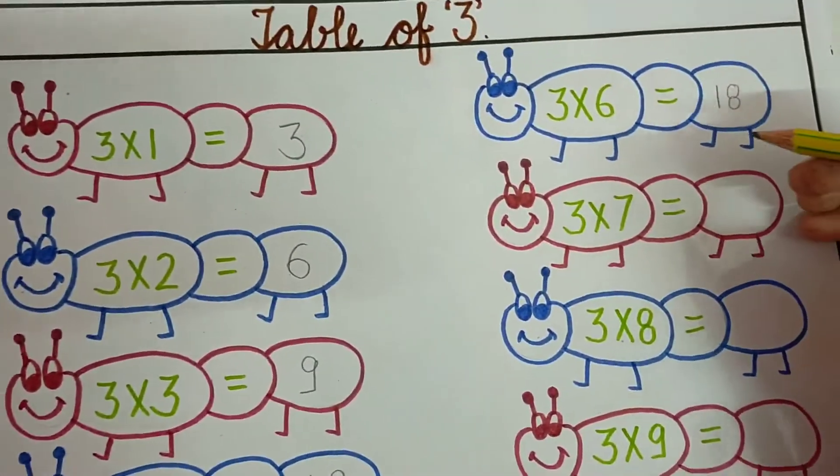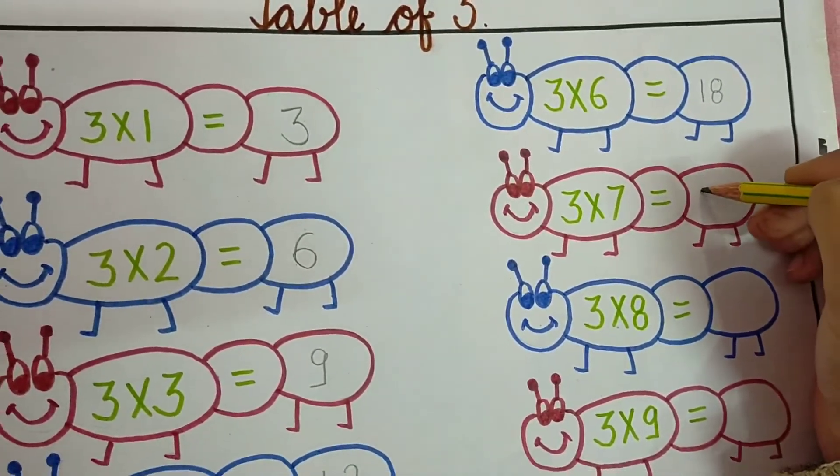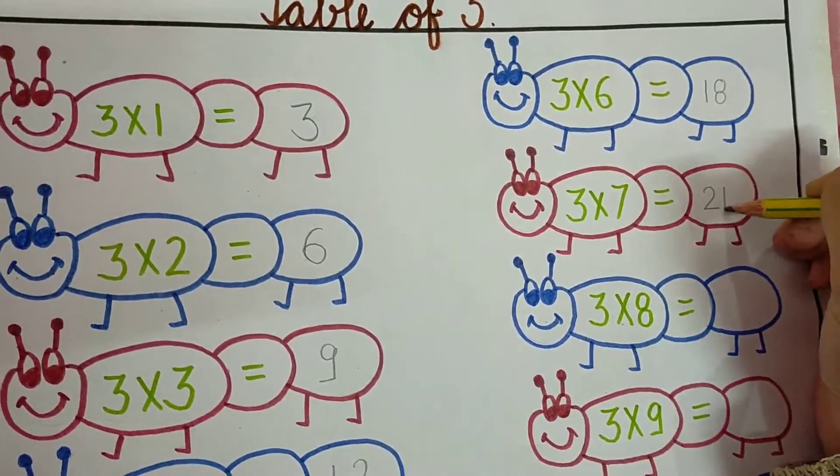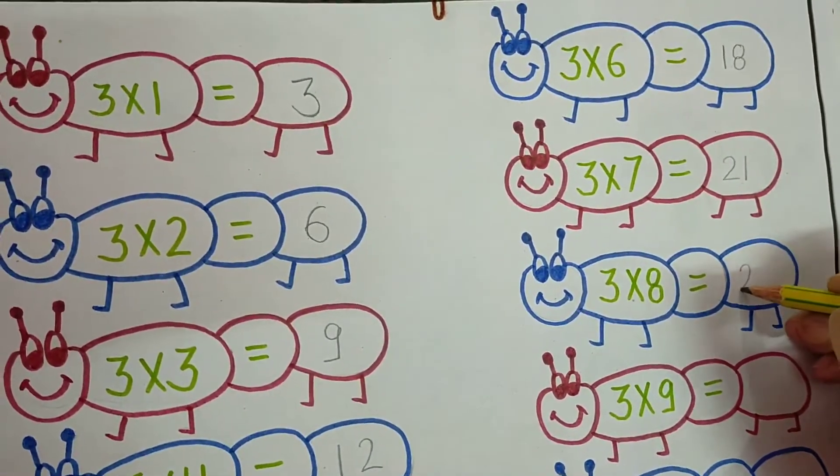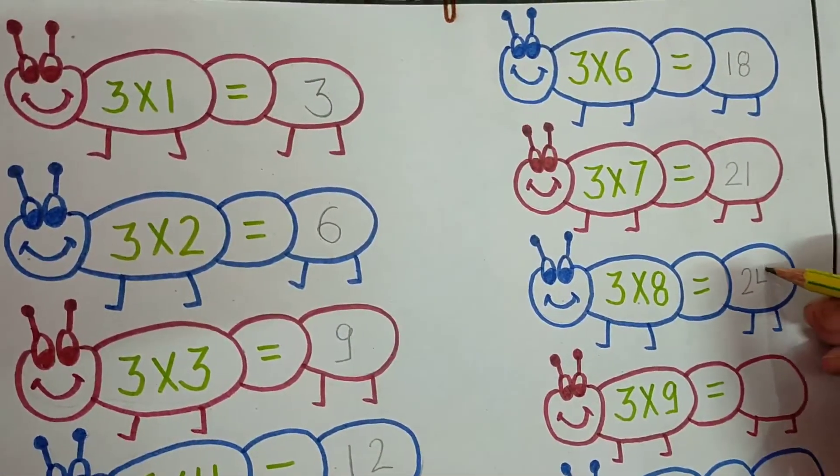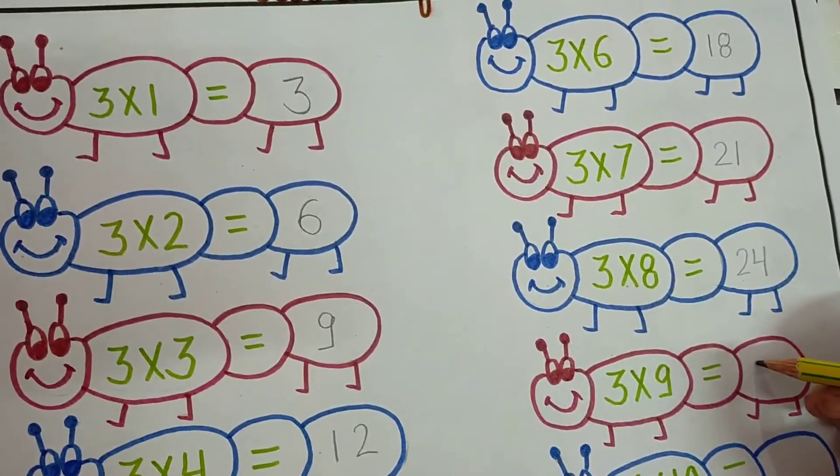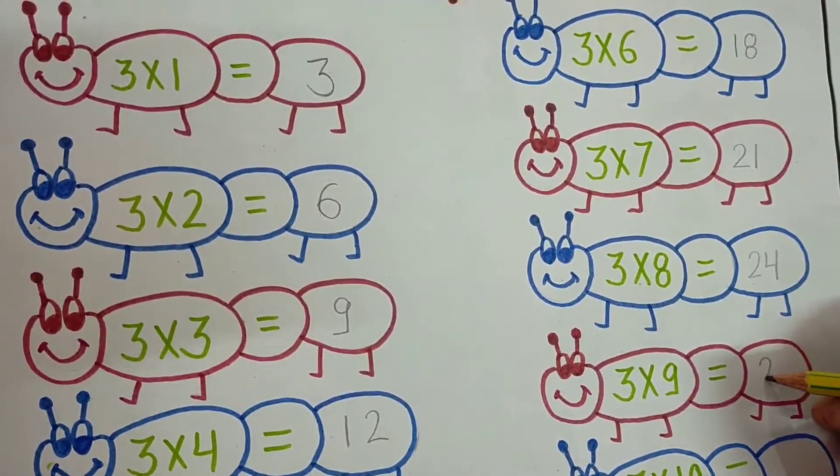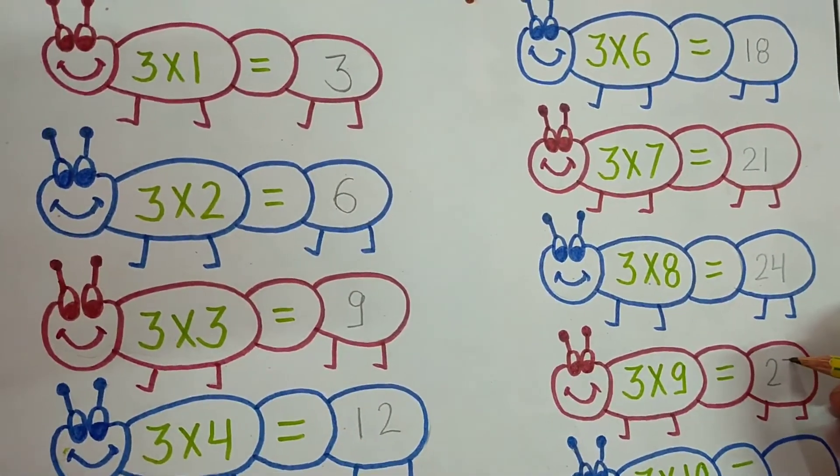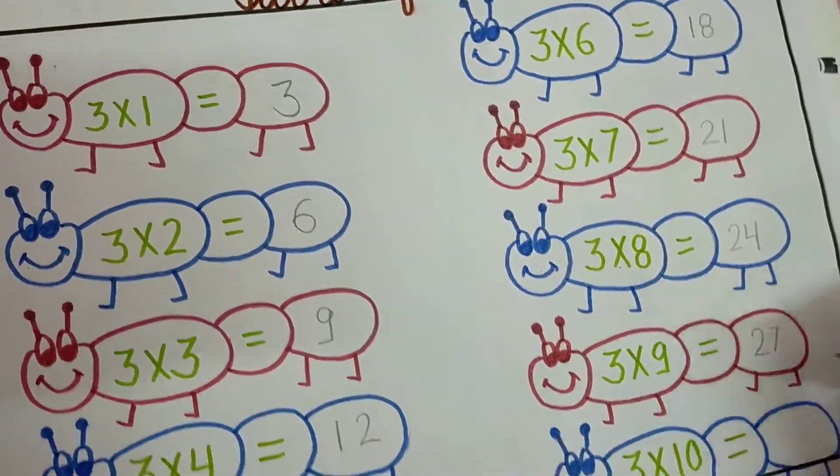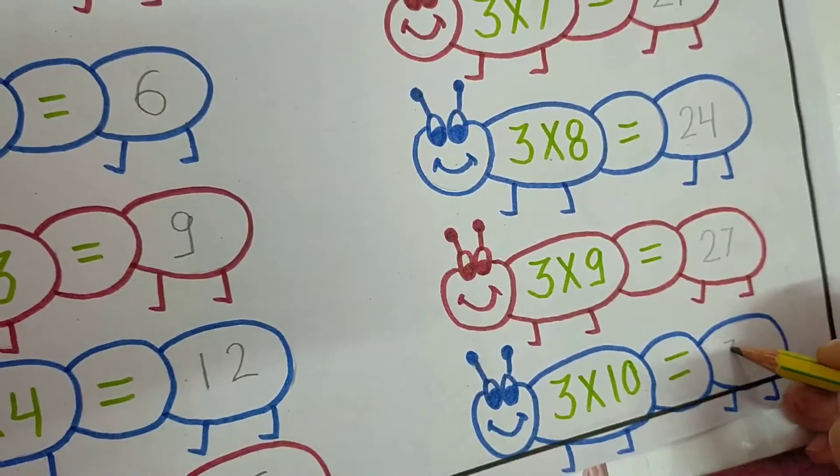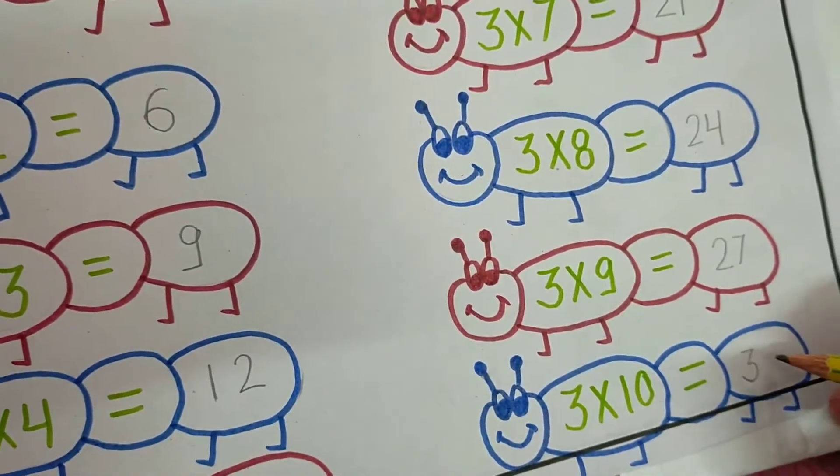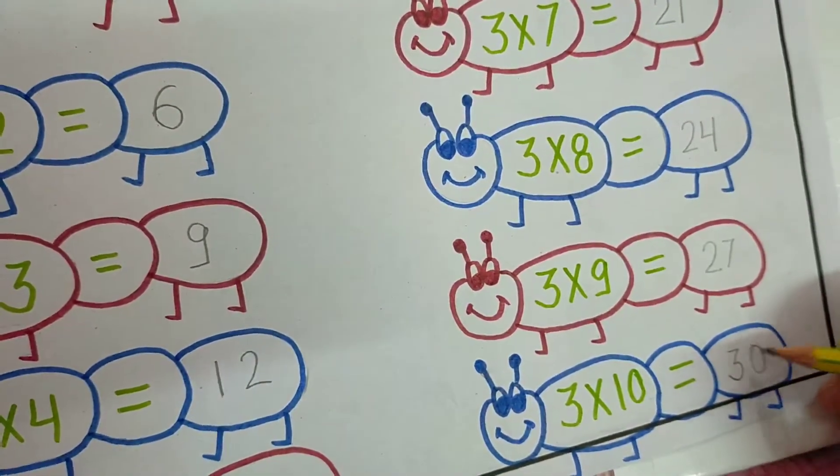3 times 7 equals 21. 3 times 8 equals 24. 3 times 9 equals 27. 3 times 10 equals 30.